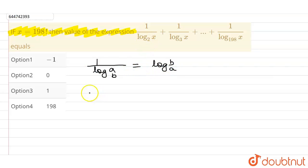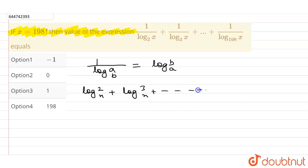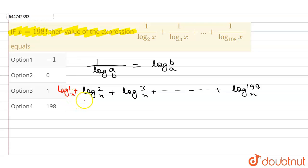So I can write this term as log of 2 to the base x plus log of 3 to the base x plus dash dash dash plus log of 198 to the base x. We know that log of 1 is 0, so log of 1 to the base x is 0, and we can add 0 to any equation — the equation remains the same.